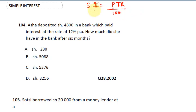What simple interest means is: I could take my money — say 1,000 shillings — and give it to the bank to hold for a period of time, and they pay me some interest. The money they pay me is called the interest. The money I give to them is called the principal. The time could be six months or one year. The rate at which they pay me is called the rate.